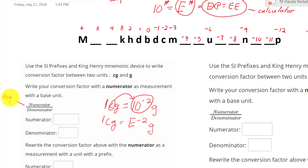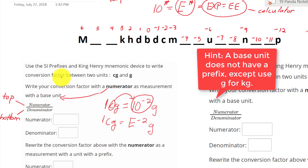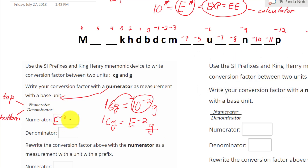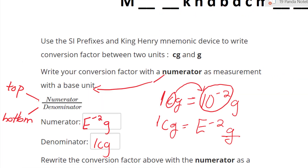Now, numerator is on top, denominator is on the bottom. We are going to learn how to submit our answer. Write your conversion factor with the numerator as the measurement with the base unit. Our base unit is gram. So, the numerator will be E negative 2 gram, and the denominator will be 1 centigram. Written as a fraction: E negative 2 gram divided by 1 centigram. This is how it looks as a fraction, and this is how you will submit your answer.